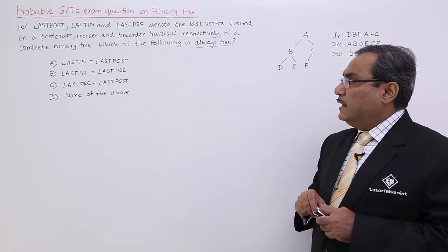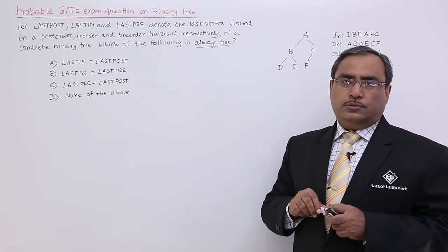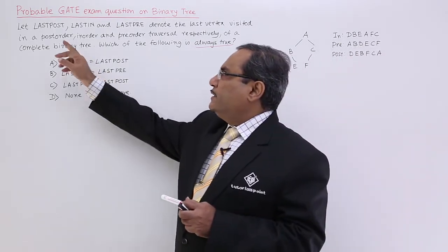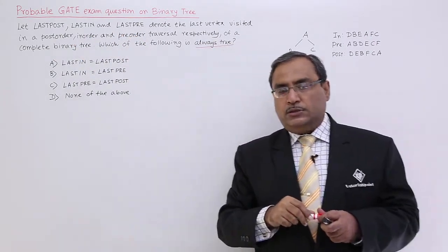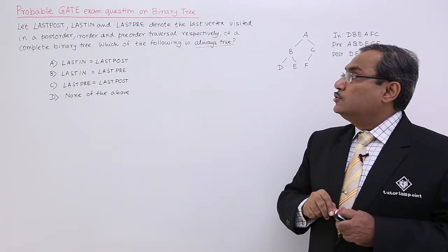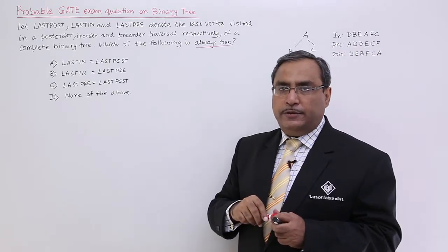That is the LASTIN is equal to LASTPOST and these options are given. So, last means the last node traversed and in case of post means post-order, in case of in means in-order, in case of pre means pre-order. Last note traversed.